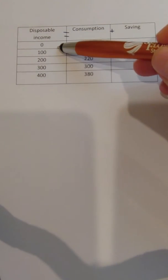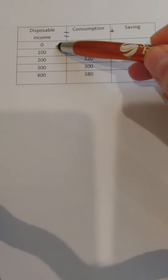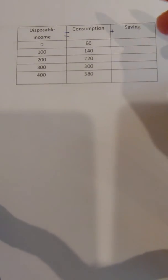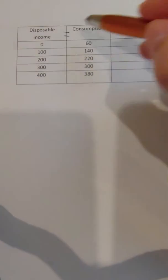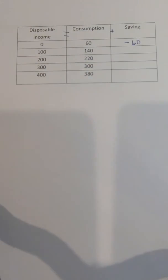For disposable income, if we don't have any, we're still going to have some consumption. So let's say we have zero disposable income; we're going to consume 60. That's our autonomous consumption - autonomous meaning independent of. So if disposable income is zero and consumption is 60, to make this formula work, saving has to be negative 60. Negative 60 plus 60 equals zero.